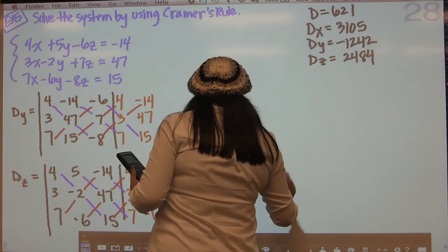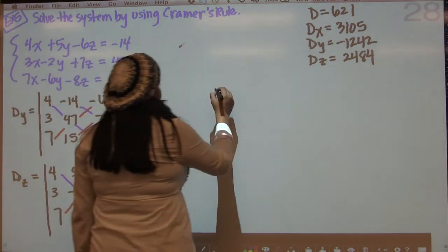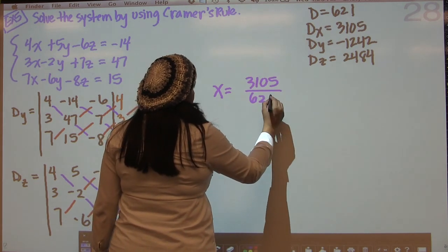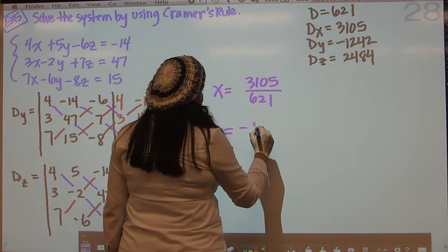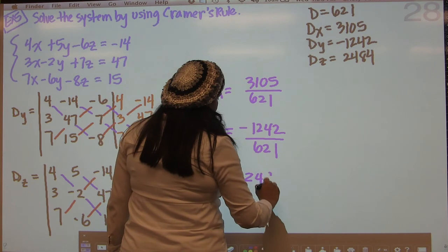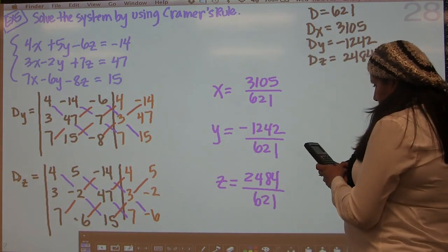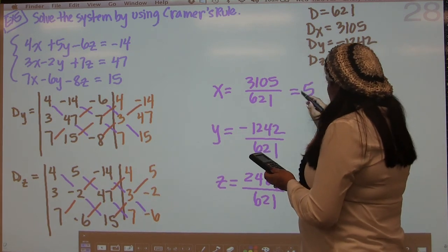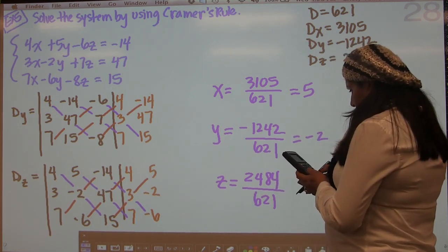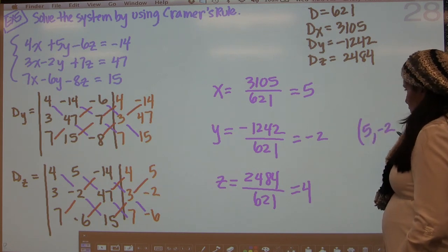To get our final answer — that's the easy part. x equals dx over d, which is 3105 divided by 621. y equals dy over d, which is negative 1242 divided by 621. And z equals dz over d, which is 2484 divided by 621. So: 3105 divided by 621 is 5; negative 1242 divided by 621 is negative 2; and 2484 divided by 621 is 4. Our final answer is x = 5, y = negative 2, and z = 4.